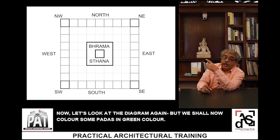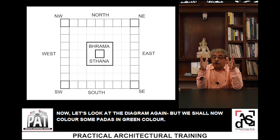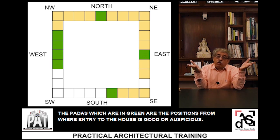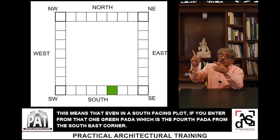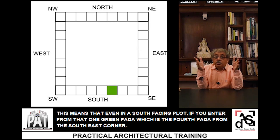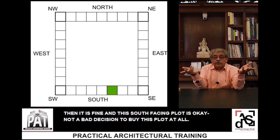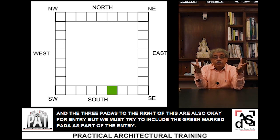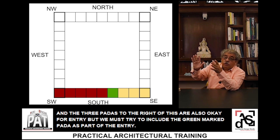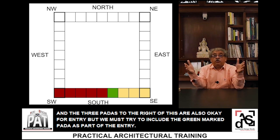Look at the diagram again. The Padas coloured in green are the positions from where the entry to the house is auspicious. This means that even in a south-facing plot, if you enter from the one green Pada — which is the fourth Pada of the length from the south-east corner — then it is fine. The three Padas to the right of this are also okay for entry, but we must try to include the green-marked Pada as part of the total entry.